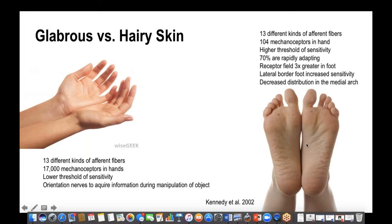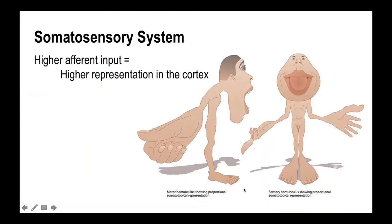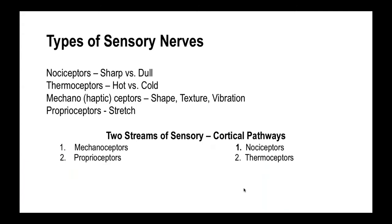An argument sometimes made for orthotics is that they increase stimulation by bringing the orthotic up into the medial arch to create skin-to-orthotic contact. However, what I would argue is that you don't even have mechanoceptors on your medial arch. So they really don't increase mechanoceptor stimulation. When it comes to hairy skin - which is every other part of your body, particularly just above the ankle, around the wrist, forearm, and knee - you have only three different types of mechanoceptors, compared to 13 in the hands and feet.